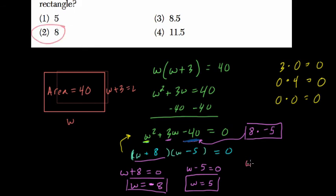So you can test this out. Width by length. What happens when you multiply them? We should get 40. Well, the width is 5. The length is 3 more than that, or 8. And that works. 5 times 8 is 40. So we found it.